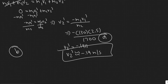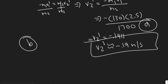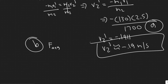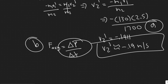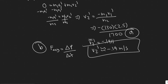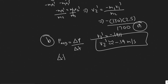Moving on to Part B: if the push lasts 0.5 seconds, what is the average force exerted by each on the other? The average force equals the change in momentum over the change in time. They tell us the push lasts 0.500 seconds, so delta T is 0.500 seconds. Now we need to solve for the change in momentum.